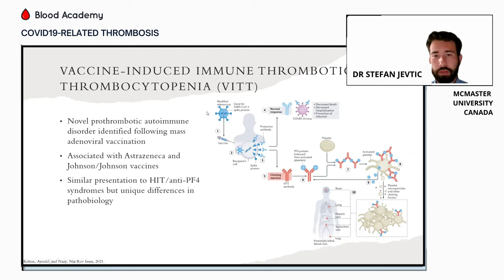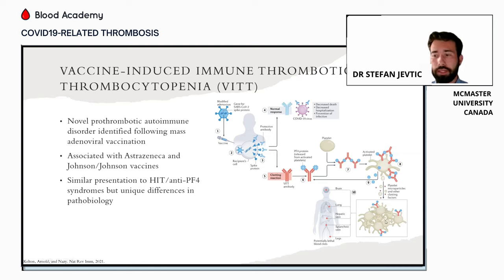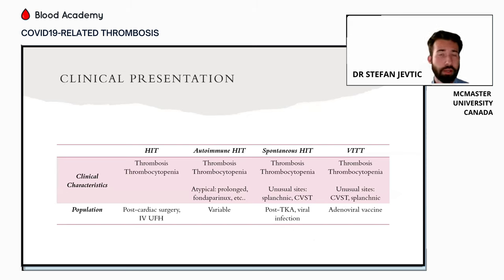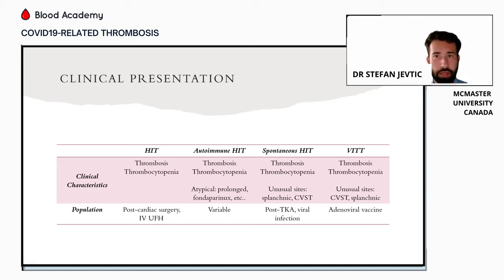When a patient is exposed to an adenovirus vaccine, for reasons still being understood, certain patients develop a prothrombotic antibody against platelet factor 4. This can activate platelets and lead to a pro-coagulant state. VITT is really on a spectrum of what we might call anti-PF4 syndromes, which include heparin-induced thrombocytopenia (HIT), autoimmune HIT, and spontaneous HIT. The key feature across all these conditions is that they present with thrombosis and thrombocytopenia, often concurrently but sometimes with delayed onset.